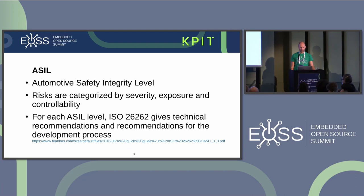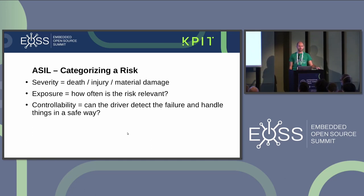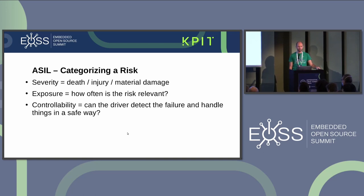I can recommend the document mentioned here as a very good summary of the ISO norm. So how can we categorize a risk? That is done by three items: severity, exposure, and controllability. Severity means what could happen in the worst case — is it death, injury, or only material damage? Exposure is how often the risk is relevant — not the probability of a failure, but how often we are in a situation where a certain bad thing could happen. And controllability means can the driver detect the failure and handle things in a safe way.